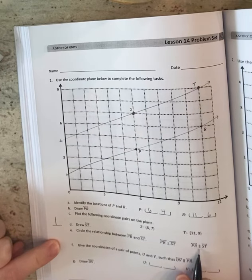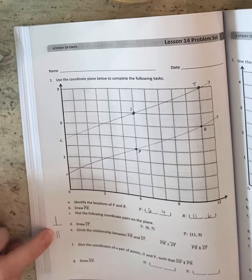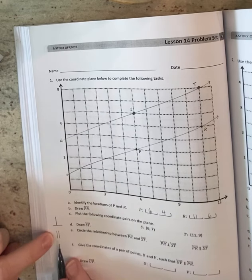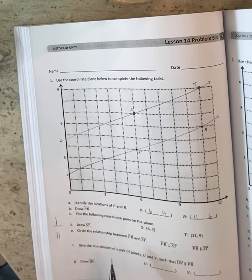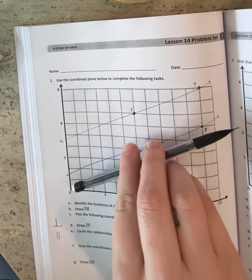This double line that looks like that, that means parallel. Okay. So intersecting parallel. So what's the relationship between PR and ST?